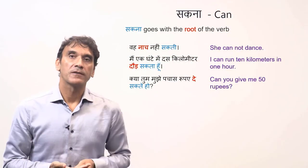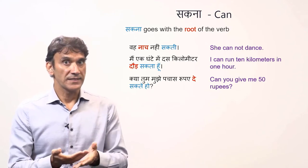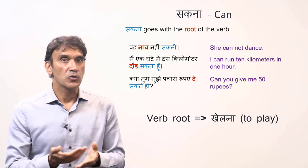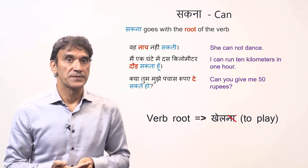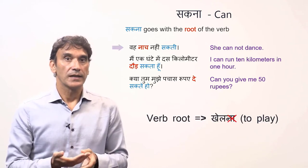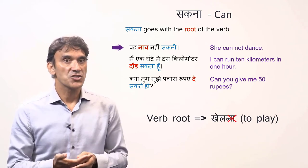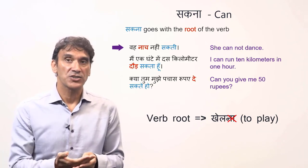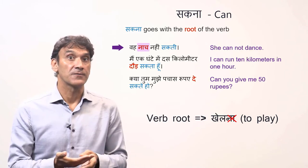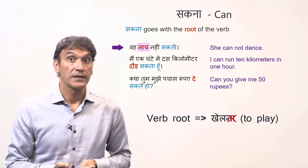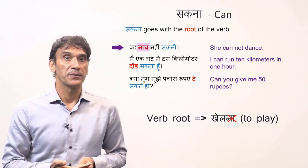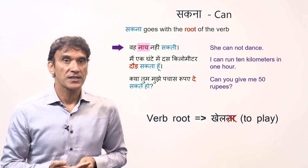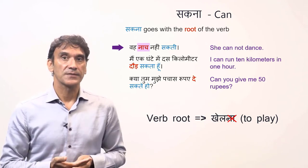The next model verb we take is sakna, which means can. Unlike the verb chahana, the verb sakna goes only with the root of other verbs. For example: 'woh naach nahi sakti' — she cannot dance. Here you can see that the verb naachna, to dance, is not in its full infinitive form. Only the root of the verb is used — naach. Woh naach nahi sakti — she cannot dance.